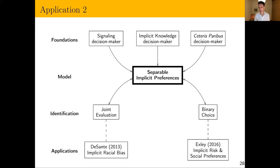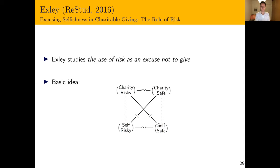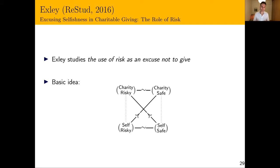Now Christine Exley's paper, which studies the use of risk as an excuse not to give. The basic idea: consider a lottery for charity — you're essentially indifferent between that and a safe payment for charity, and similarly for self. But when comparing a lottery for charity against a safe payment for myself, people start to look more risk-loving. There's an intuitive sense that this reveals a desire to give things to yourself, achieved by distorting your risk preferences.